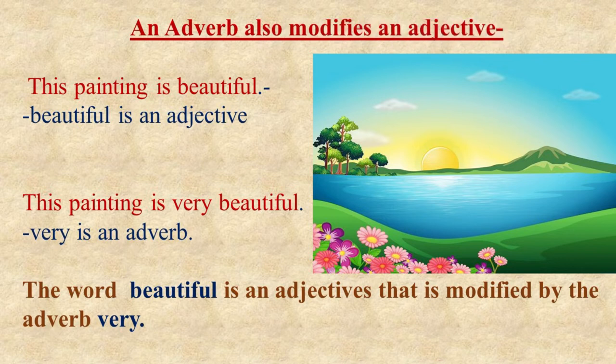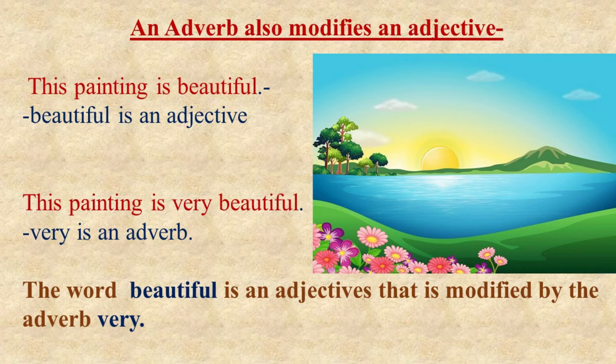Let us see how it works. There are two sentences on your screen. Please read the first sentence. This painting is beautiful. Here in this sentence, the word 'beautiful' is describing the painting, which is a noun. The word which describes a noun is called an adjective. So, the word 'beautiful' is an adjective in this sentence.